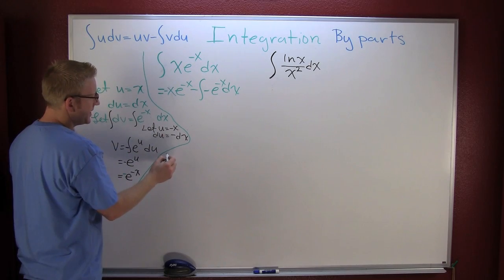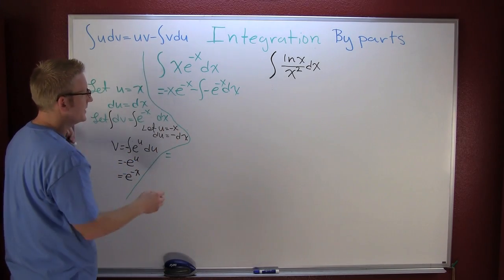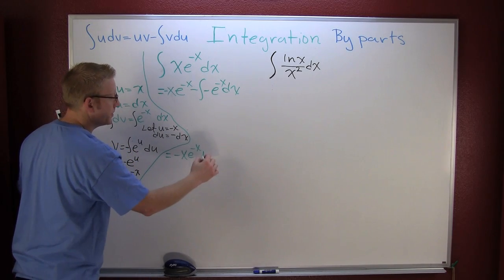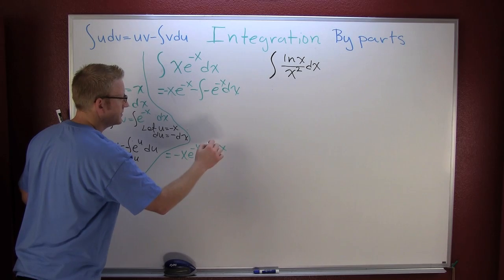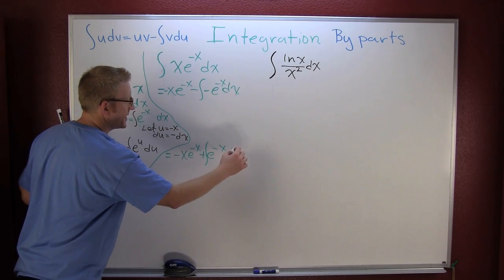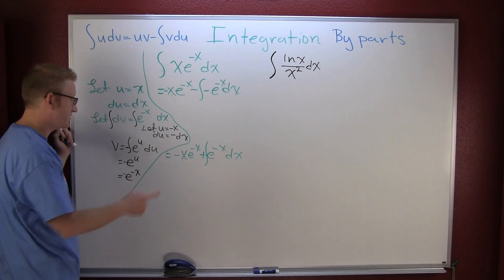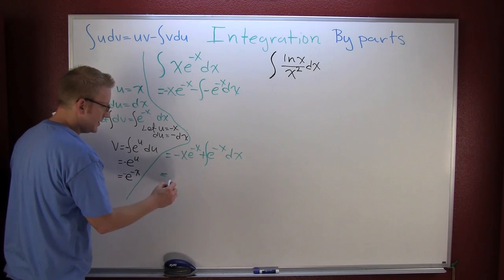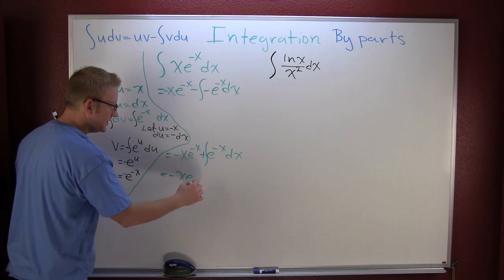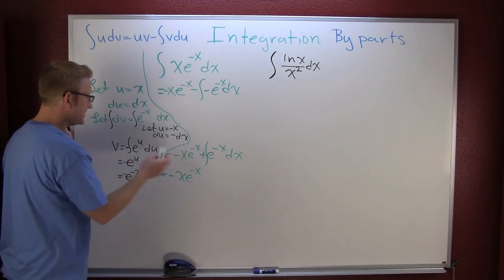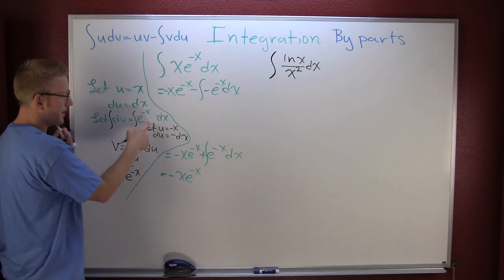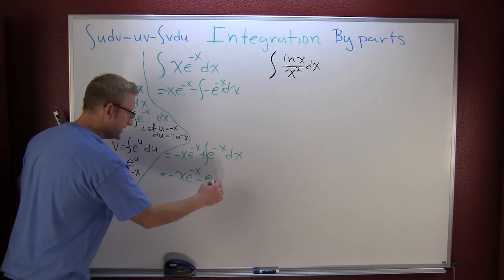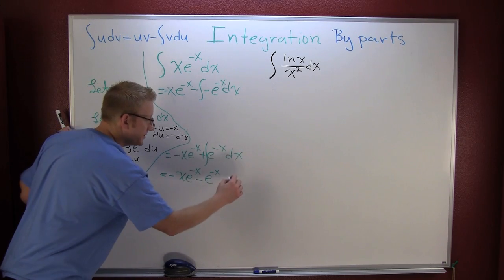This is minus x e to the minus x. The minus and minus make plus e to the minus x. The integral of e to the minus x dx, but wait there's more, we've already integrated this guy. So then this is minus x e to the minus x, and the integral of e to the minus x, after our substitution, is going to be minus e to the minus x, and then here's where we're going to pick up our plus c.